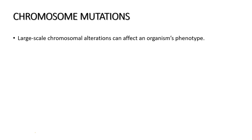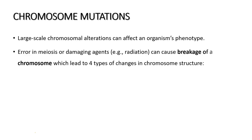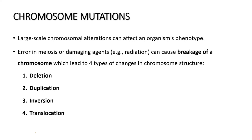Large-scale chromosomal alterations can affect an organism's phenotype. Errors in meiosis or damaging agents such as radiation can cause breakage of a chromosome, leading to four types of changes in chromosome structure: deletion, duplication, inversion, and translocation.